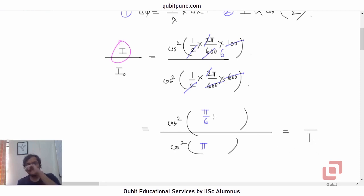How much is cos pi by 6? It is root 3 by 2, so its square will be 3 by 4. So 3 by 4 is the ratio.